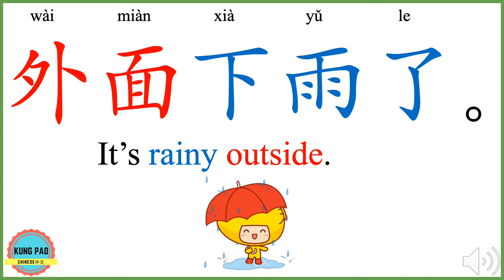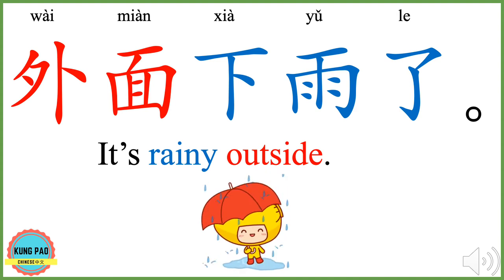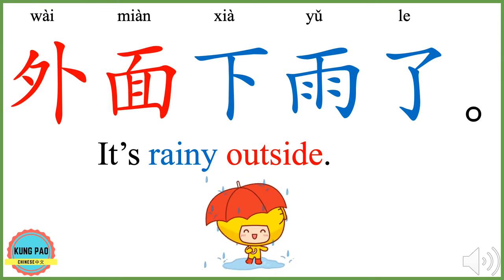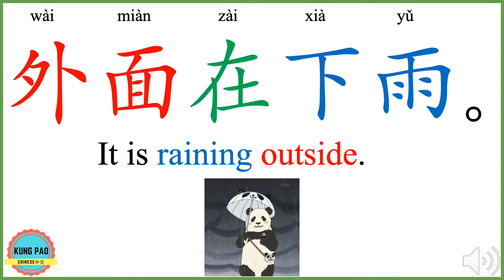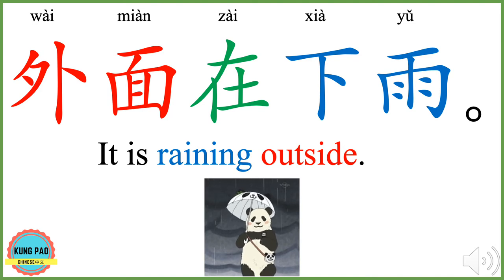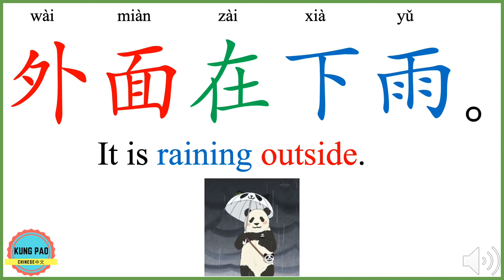外面下雨了。 外面 means outside. 下雨 means raining. 了 here shows the state or situation of 下雨. 外面下雨了 means it's raining outside. 外面在下雨。 在 is a symbol to show the present continuous tense. 外面在下雨 means it is raining outside.